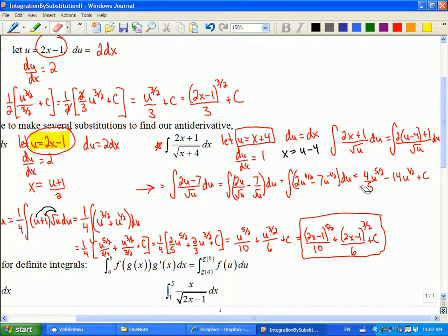So that means this will be divided by 3 halves. So that bottom number should be a 3, not a 5. And same thing here. So that gets me 4 thirds. And my substitution was x plus 4 to the 3 halves minus 14x plus 4 to the 1 half plus a constant.